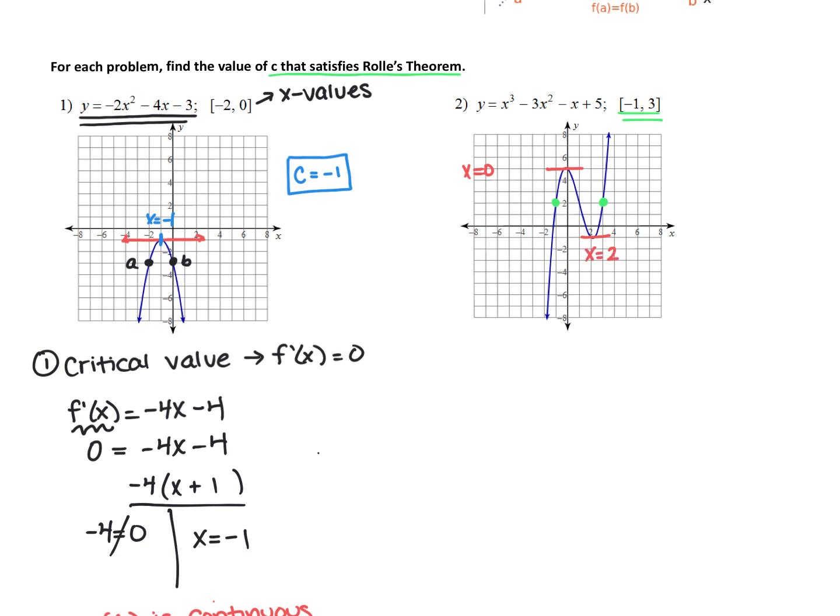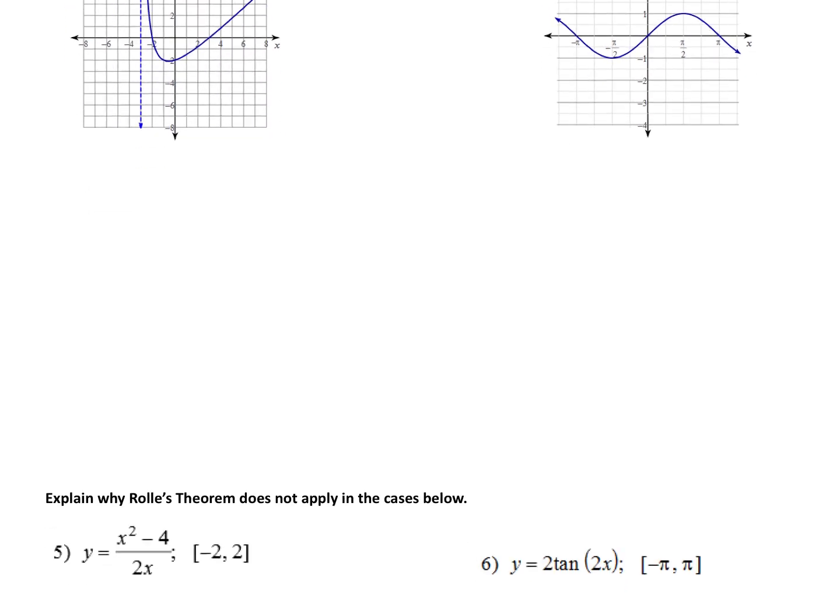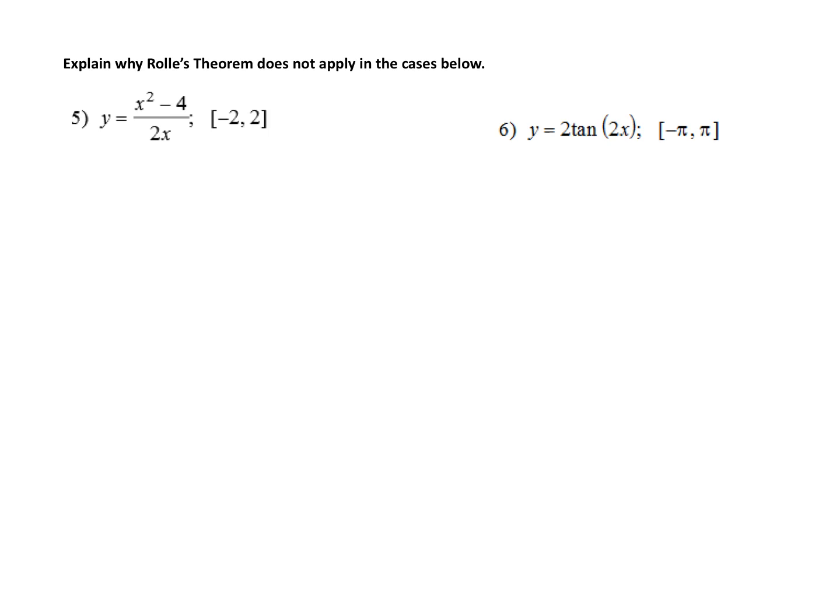So I see one here at x equals zero, and I see another one here at x equals two. So that's it. That works for Rolle's theorem. So the c values are going to be zero and two. Again, this one doesn't work algebraically. I wouldn't give you one like this on the test unless I said it doesn't work that way. So don't stress about that. All right. Just for purposes of time, I think we're going to skip three and four, and we're going to move on to examples five and six.